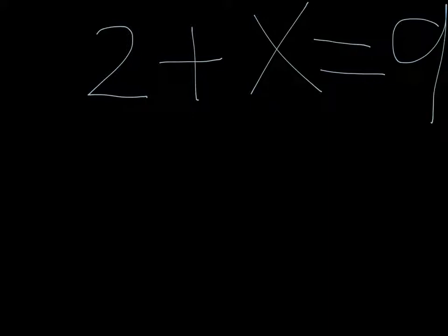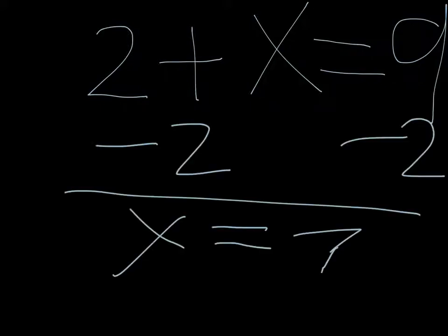To solve the equation, you would need to isolate x and make it balanced. By making it balanced, you must minus two on both sides. This is critical to start from the problem, because then you would need to find the other given number to solve the problem.